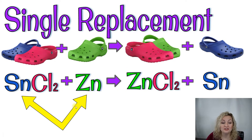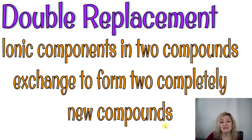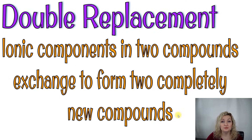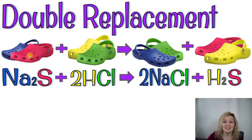Zinc is now in our compound and tin is now off to the side — it used to be tin in the compound, now it's zinc. Next is double replacement, also called double displacement. Ionic components in two compounds exchange to form two completely new compounds. A really big difference between single and double is that in the double we're forming two new compounds.